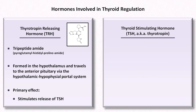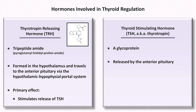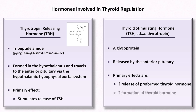TSH, known formally as Thyroid Stimulating Hormone, as well as Thyrotropin, is a glycoprotein. It has a number of different specific effects, all of which are focused on increasing the physiologic actions of thyroid hormone. These are to increase the release of preformed thyroid hormone, to increase the rate of thyroid hormone formation, and to increase the size and number of thyroid cells which produce that hormone.